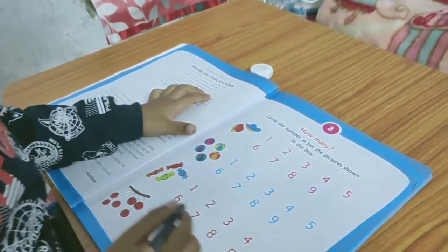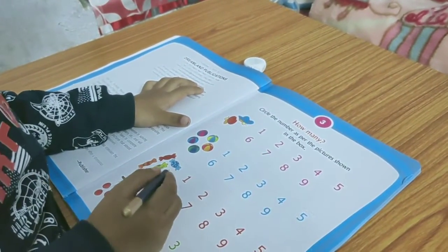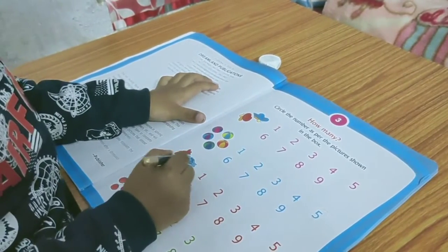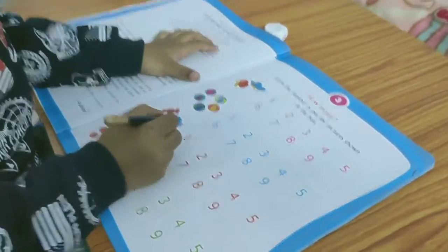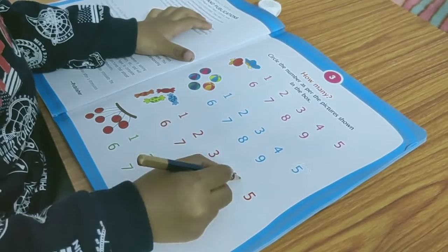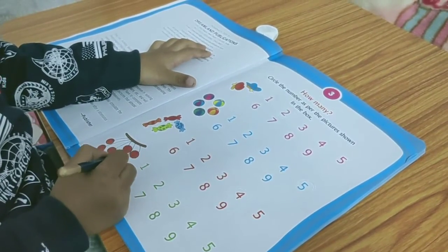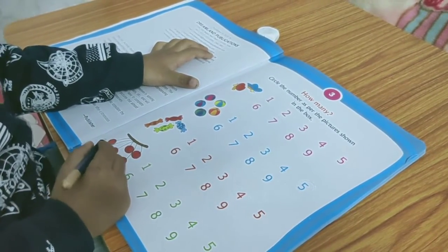Very good. Then, how many chocolates are there? One, two, three, four. Okay. One, two, three, four, five, six. Very good.